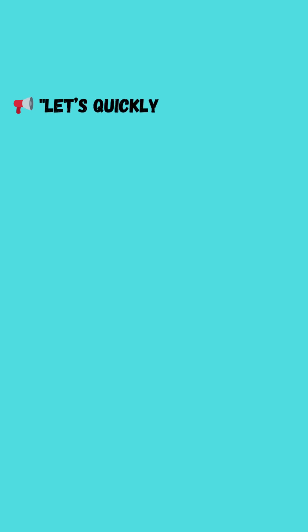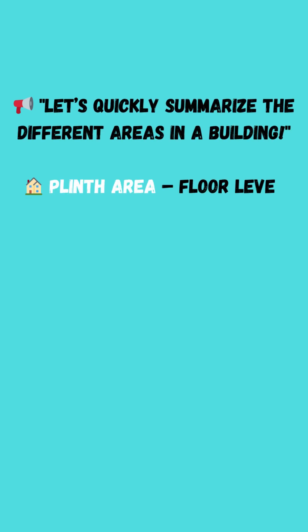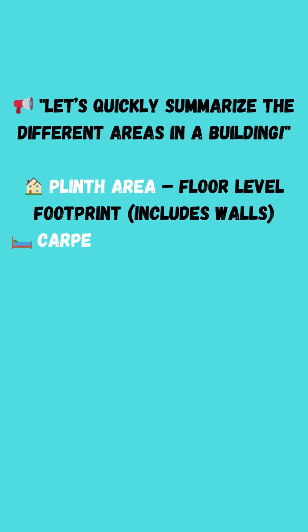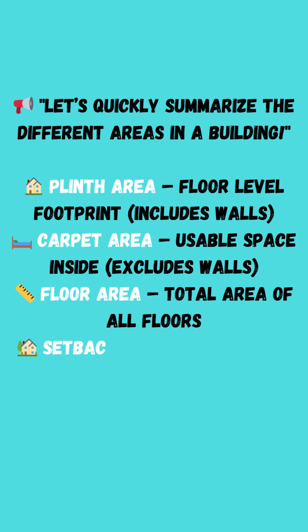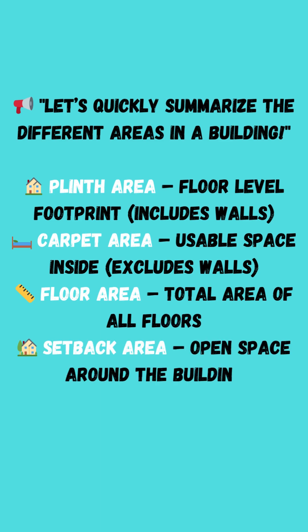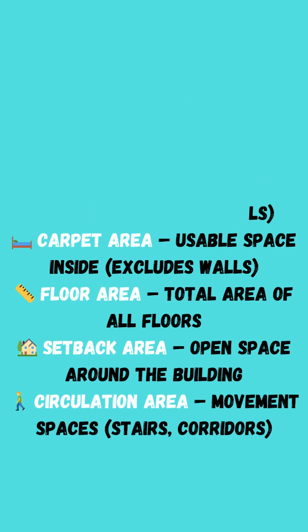Let's quickly summarize the different areas in a building: plinth area — floor level footprint, includes walls; carpet area — usable space inside, excludes walls; floor area — total area of all floors; setback area — open space around the building; circulation area — movement spaces like stairs and corridors.